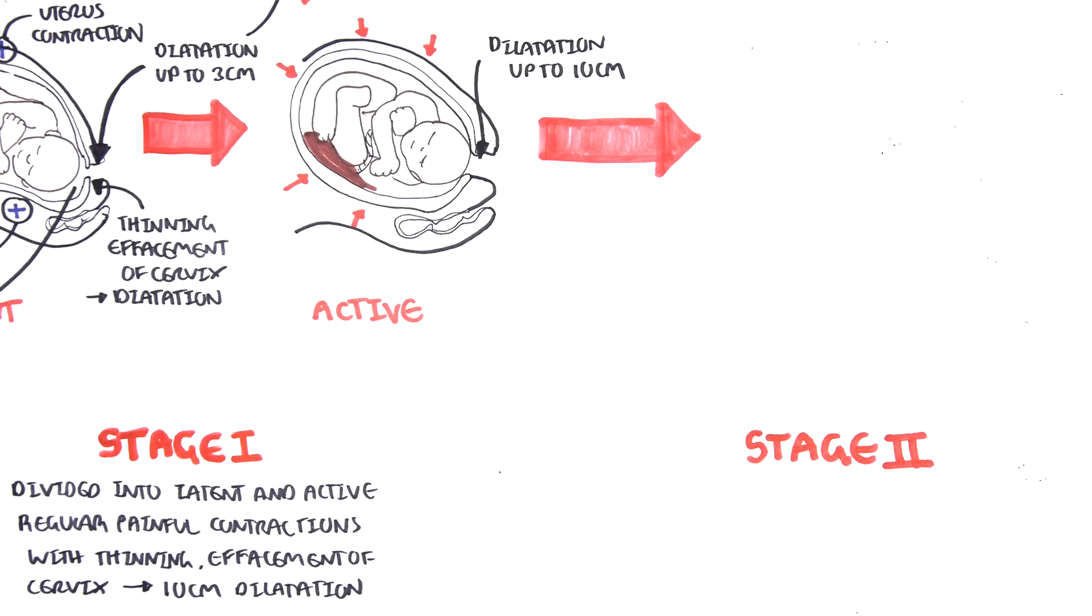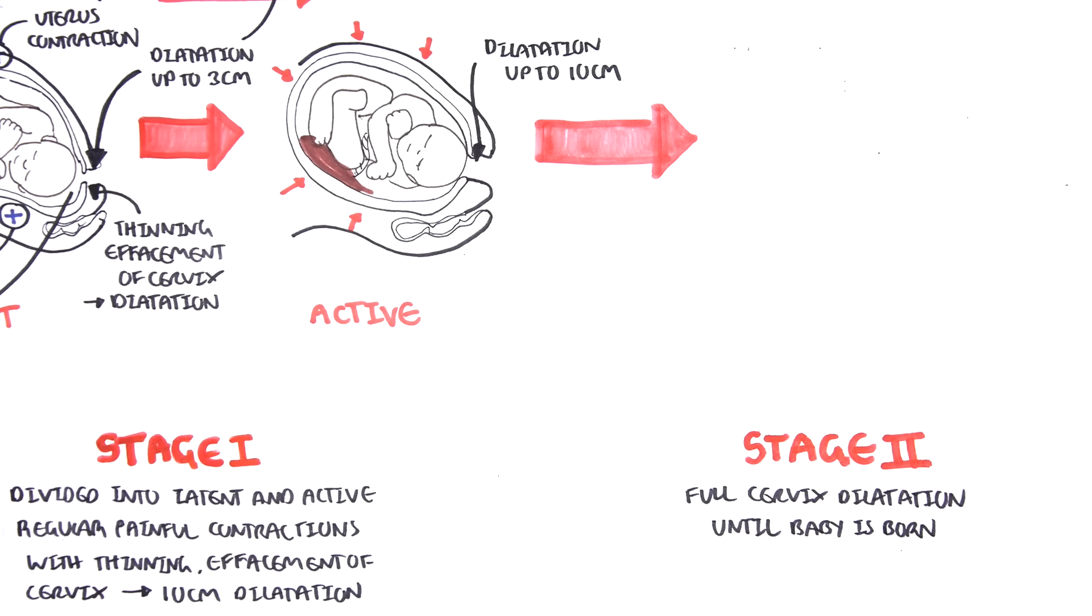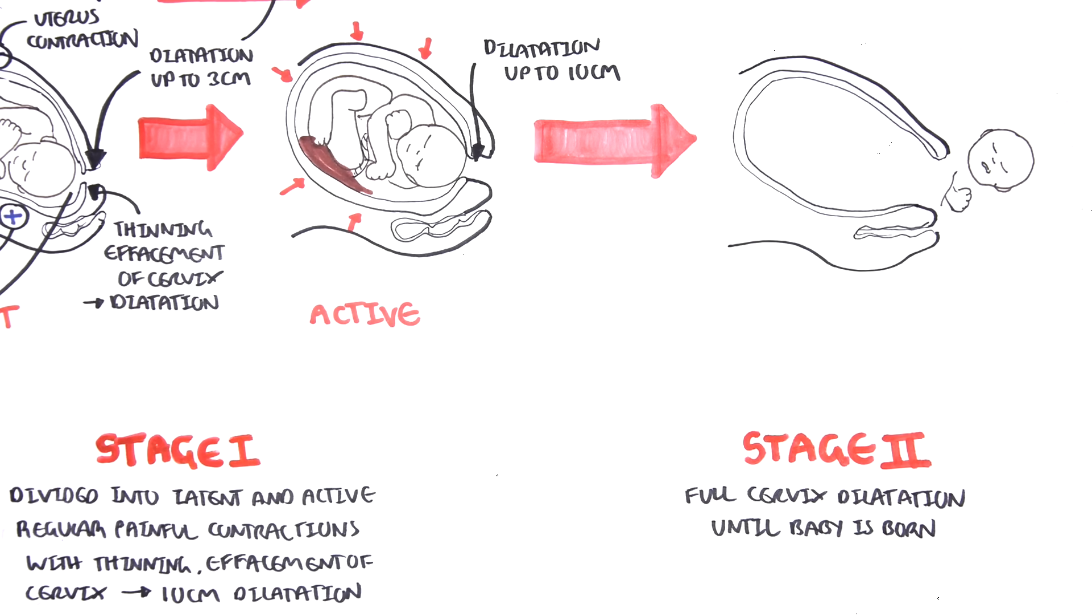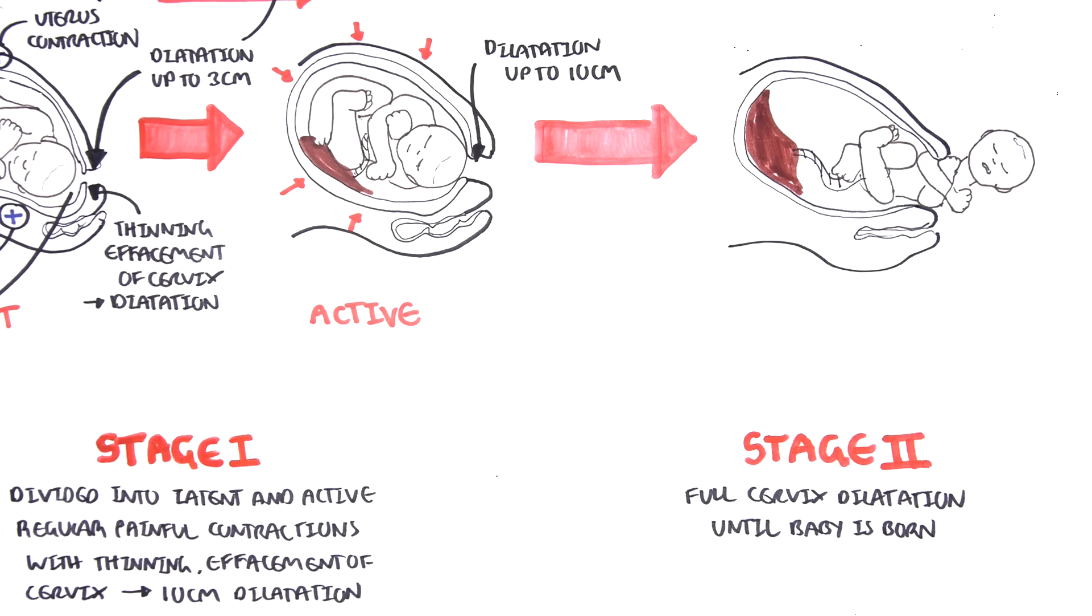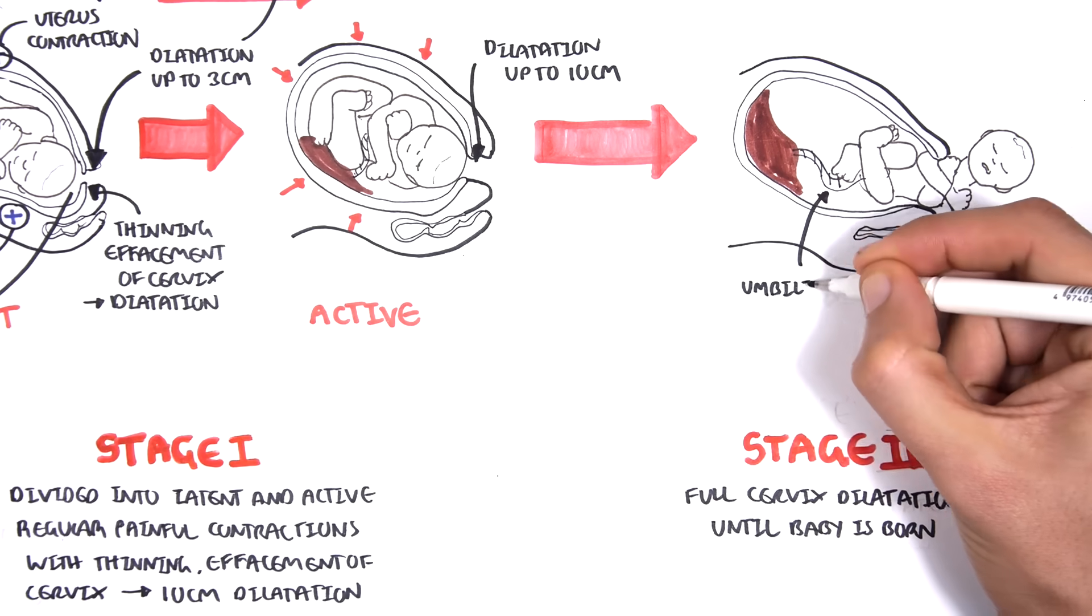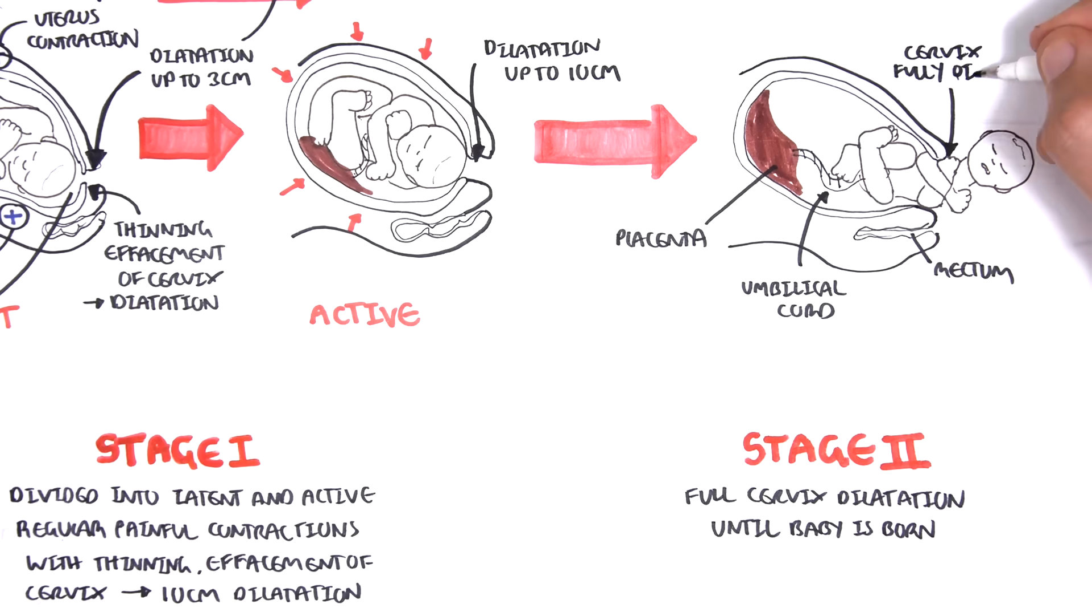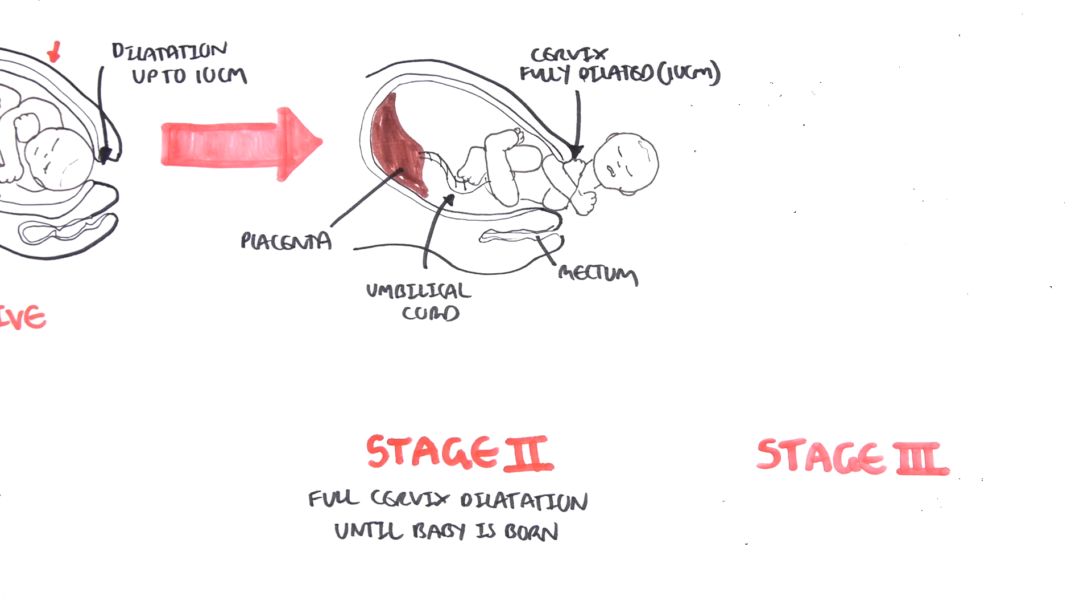After stage 1, labor progresses to stage 2. Stage 2 is from full cervix dilatation until the baby is born. Basically, in stage 2 of labor, this is where the mother is delivered from the baby. Here is the umbilical cord, the placenta, the rectum of the mother, and the fully dilated cervix which is about 10cm in diameter. During this time, the uterus is still having regular painful contractions.